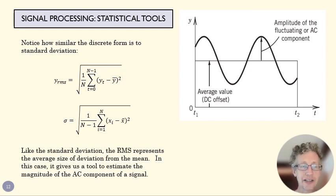Like the standard deviation, RMS represents the average size of that deviation from the mean, telling us how big that AC component is on average. You can imagine we could have a signal that had the same DC component but oscillations at a lower level. The RMS for that signal would be significantly less. So it's telling us how large those oscillations are in terms of amplitude.